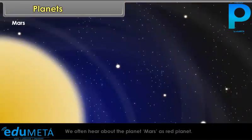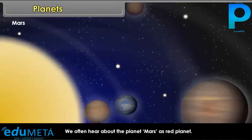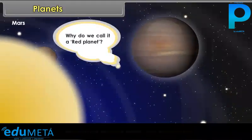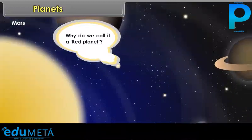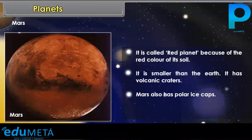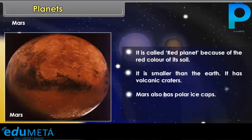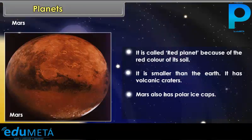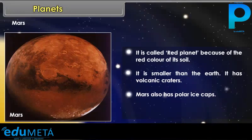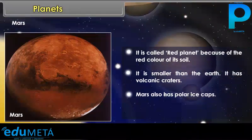Mars is often referred to as the red planet because of the red color of its soil. It is smaller than the Earth and has volcanic craters. Mars also has polar ice caps.